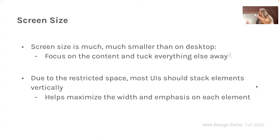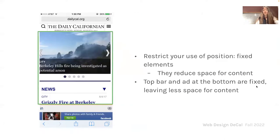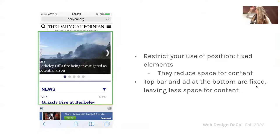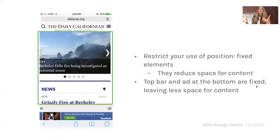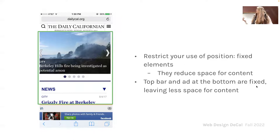Here's a bad example: the Daily Couch website. It restricts the viewing content with fixed elements — a nav bar taking up a lot of vertical space, plus a big fixed ad on the bottom. The vertical viewing container becomes a lot smaller than it could be. Try to avoid excessive use of position-fixed elements. Don't put random ads or things that don't really need to be on the page, because when you're using your thumb to scroll, a tiny container is a much worse experience.